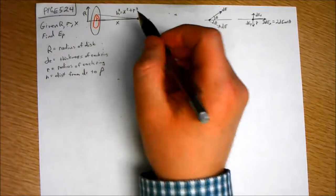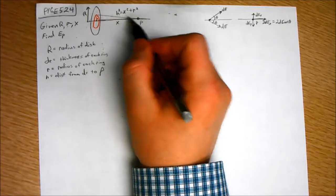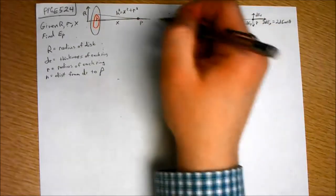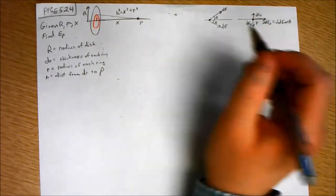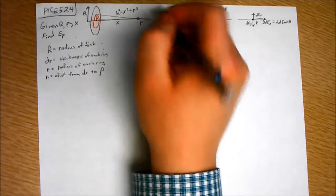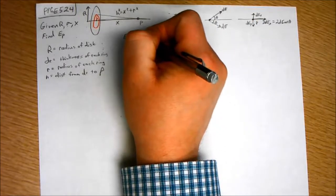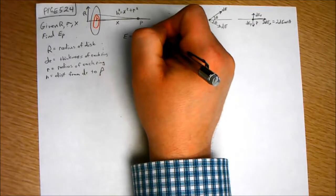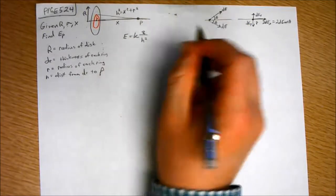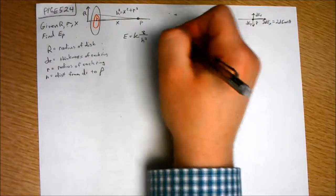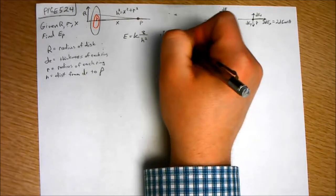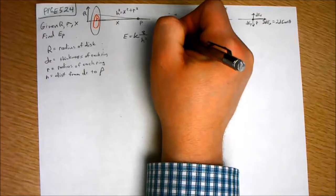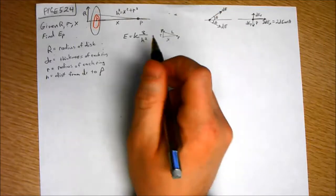The first thing to note is, here's a smaller diagram, H is the distance from P to DQ. If we look at the equation for the electric field due to point charges, E equals KQ over H squared. That is what would happen if we had a point charge Q and this is P. That would be the equation.